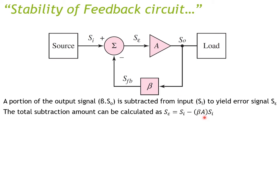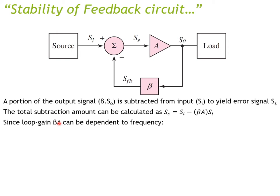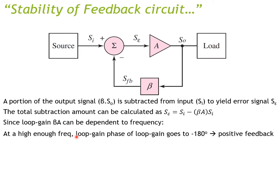This value β·A is often called loop gain. In the previous section we analyzed the frequency response of loop gain. Basically, either β or A can be dependent on frequency, and because it is a frequency-dependent function, at a high enough frequency the phase of the loop gain can go to negative 180 degrees.